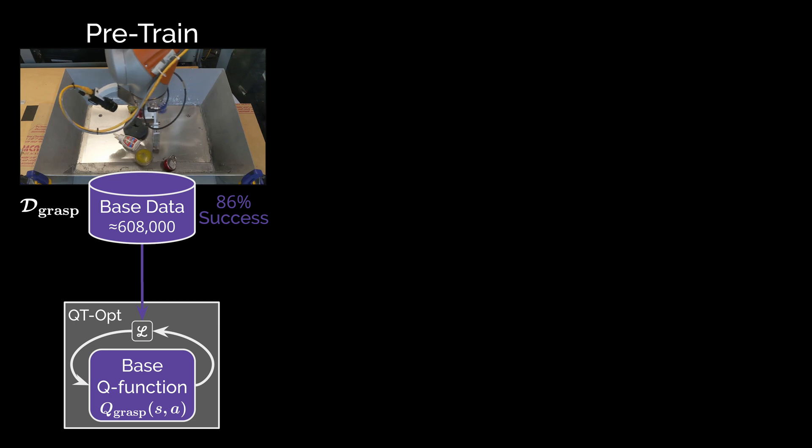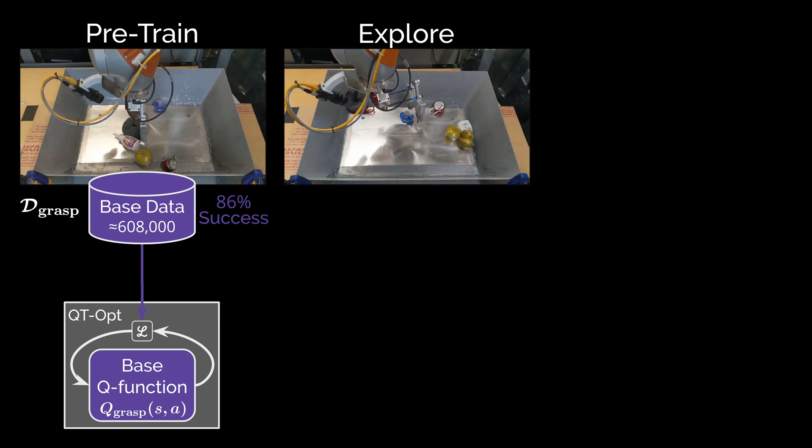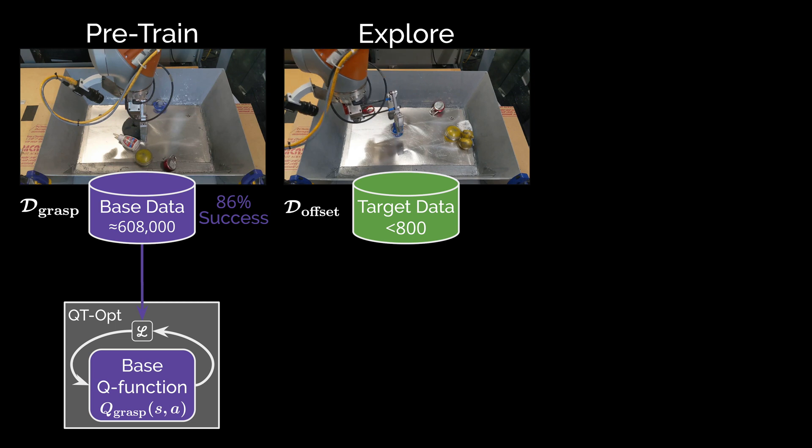We then use this Q function to explore the new task variation. In this case, we have translated the gripper 10 centimeters to the right of its original position. This exploration yields a target dataset of up to 800 grasp attempts, which take about 4 hours to collect. Here, our base Q function achieves a 43% success rate using the offset gripper.